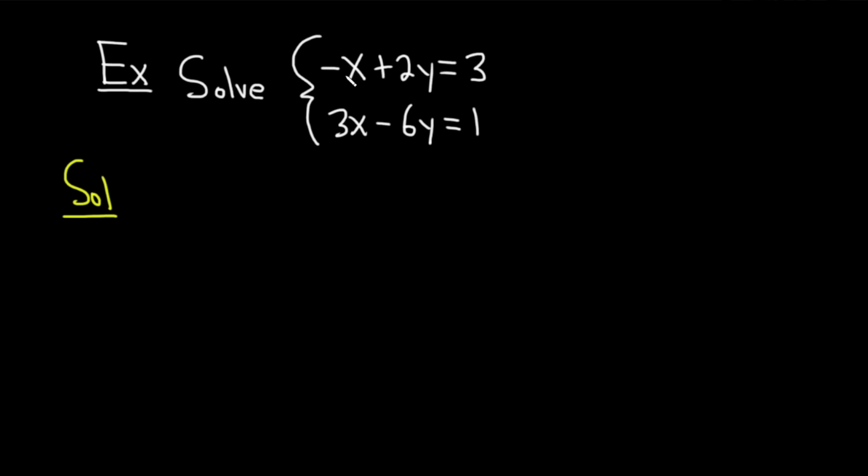That way it becomes a negative 3x, and we can add it to the second equation and get rid of the 3x. So multiplying the first equation by 3 is going to give us negative 3x. And multiplying by 3. And 3 times 2y is going to give us 6y. And then 3 times 3 is 9. And we took this first equation and we multiplied it by 3. So we got negative 3x plus 6y equals 9.